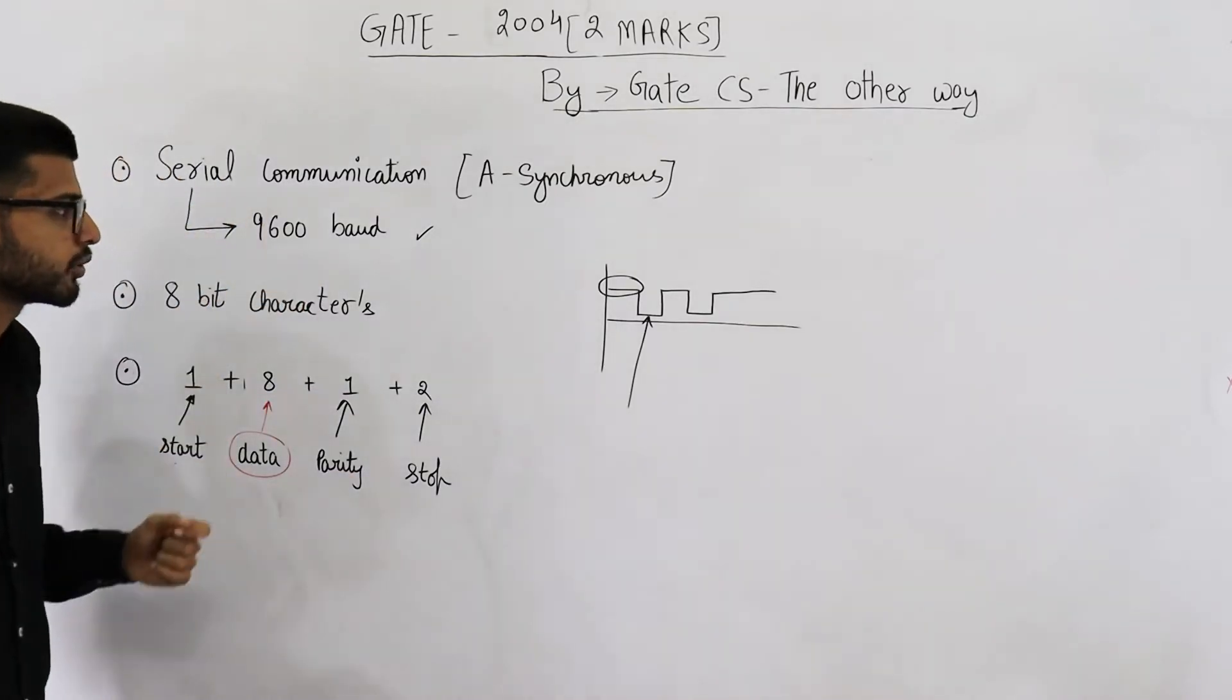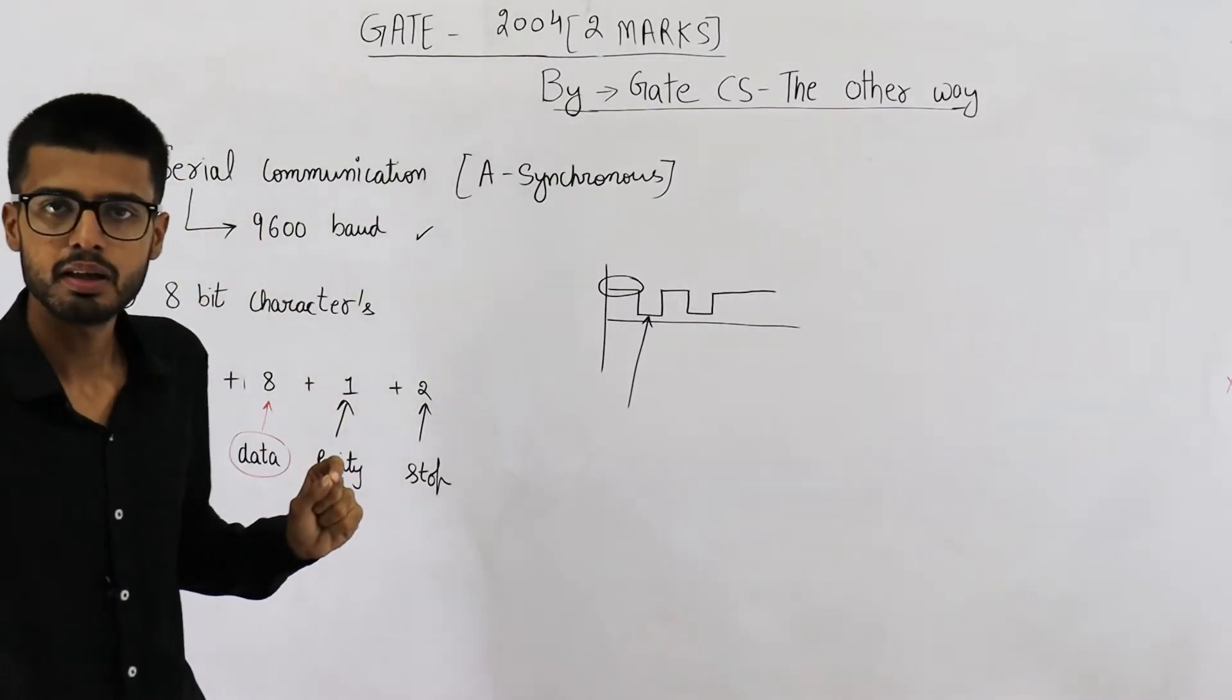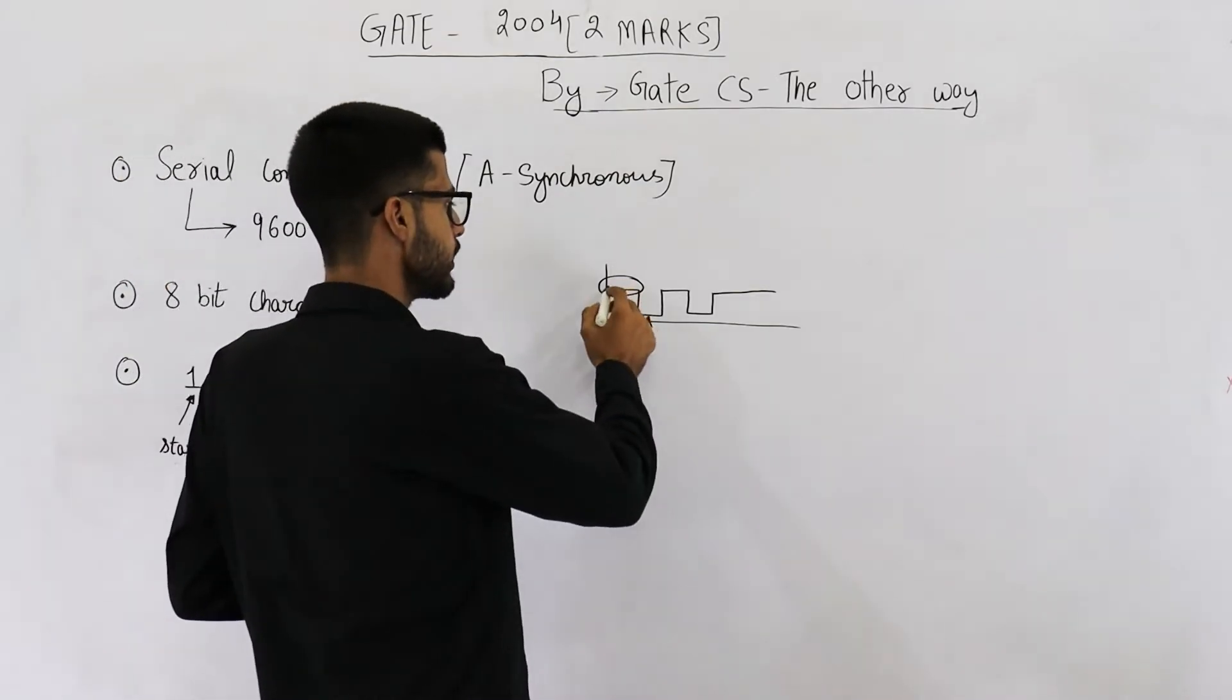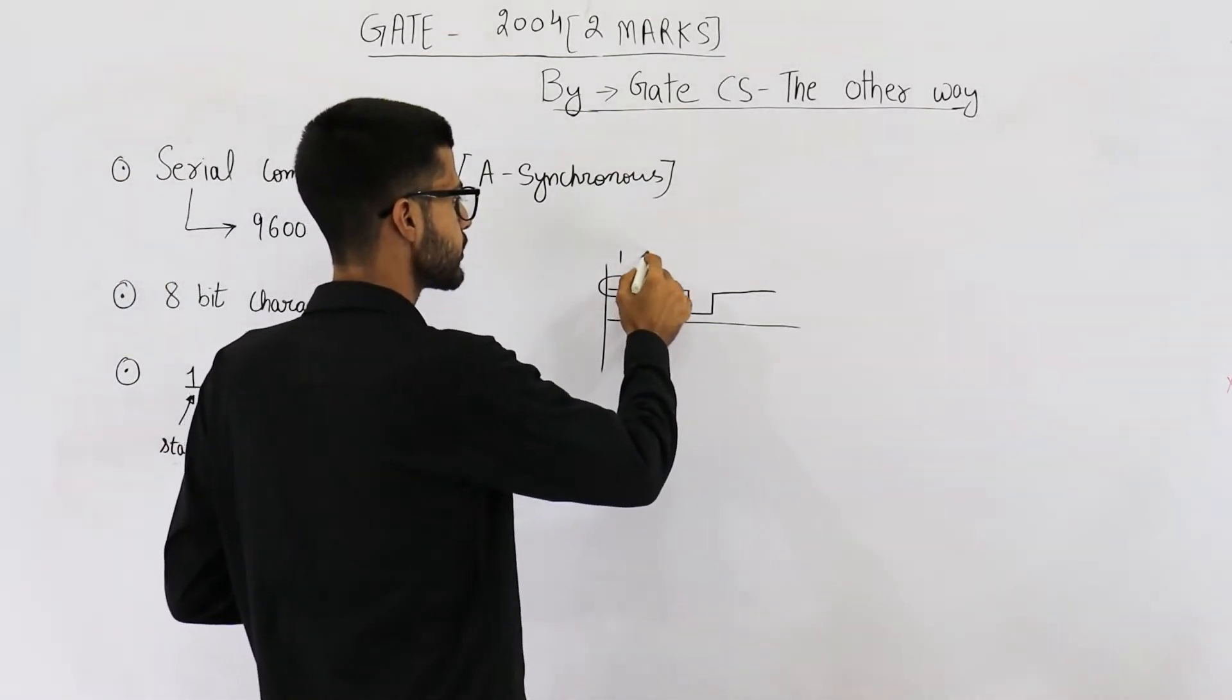Now, in serial communication, each symbol represents one bit. That means this high voltage means one. This means zero,